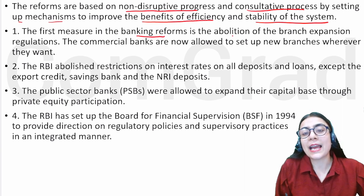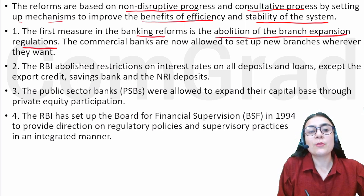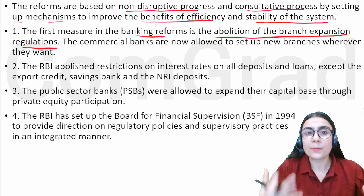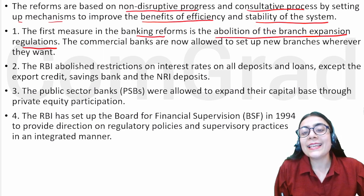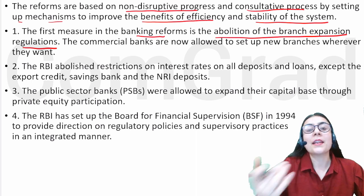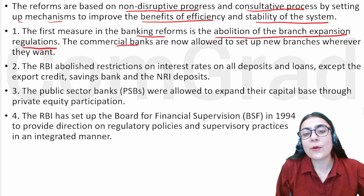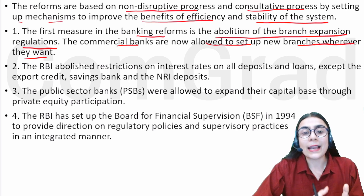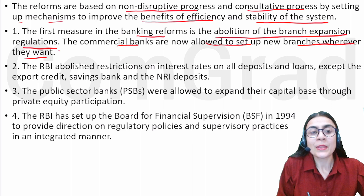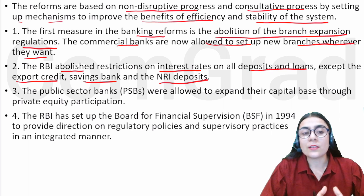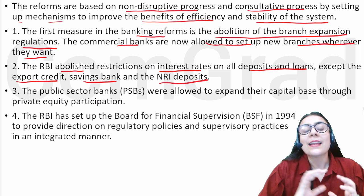The first measure in the banking reform is the abolition of branch expansion regulation. Commercial banks are now allowed to set up new branches wherever they want. Next, the RBI abolished restrictions on interest rates on all deposits and loans, except for export credit, savings bank accounts, and NRI deposits.